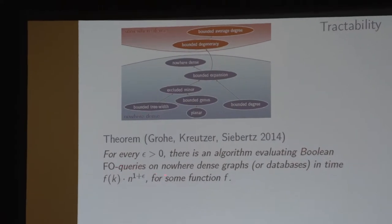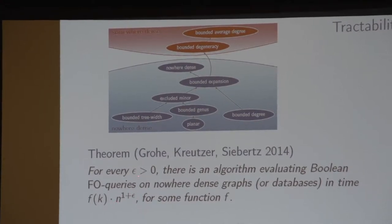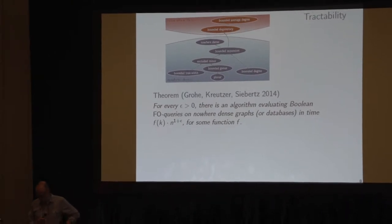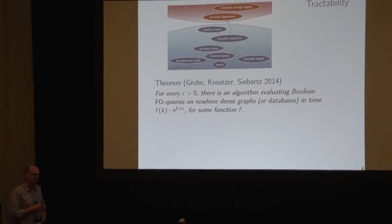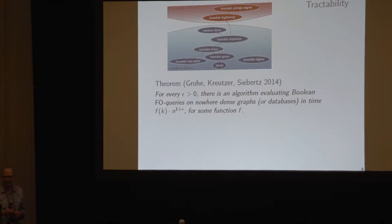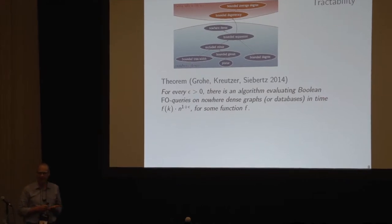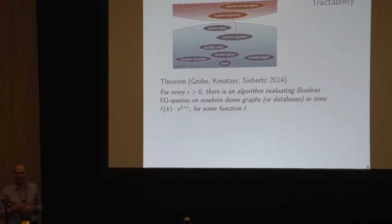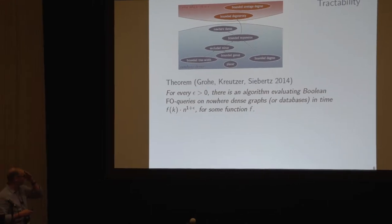What we proved is that for these nowhere dense graphs, first-order query evaluation is possible in almost linear time — that is, in time n to the 1+ε for every ε. There is a factor depending on the query, which is very large in all these results, mainly because of quantifier alternation, which automatically makes it non-elementary. For nowhere dense, you don't go through really horrible graph theory, which makes it in a way nicer. Also, we can evaluate queries with free variables on nowhere dense graphs with constant delay.